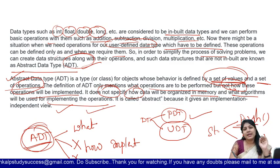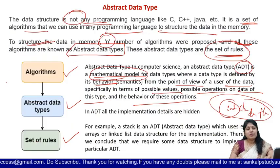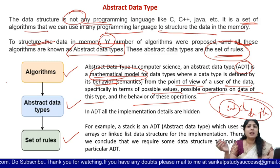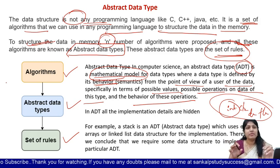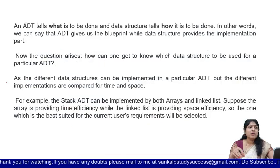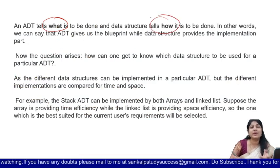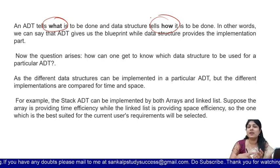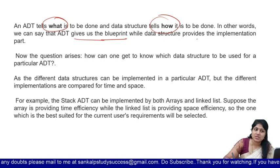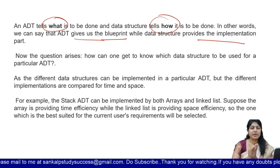So this is about ADT — abstract data type. The simple definition: data structure has set of operations for user-defined data types and different operations to perform, for which we need a set of algorithms. Those algorithms are what we call ADT. ADT just tells about what data is to be done, and data structure tells about how it is to be done. Implementation, operations, and coding — all of that is in data structures. In other words, ADT gives the blueprint while data structure provides the implementation part.